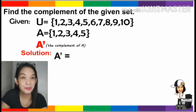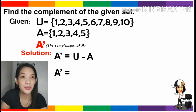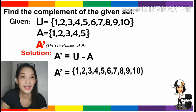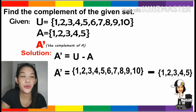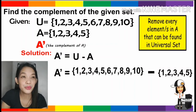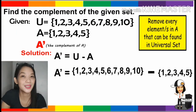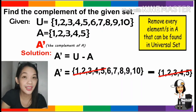To get the complement of A, we compute the universal set minus set A. So we must list the elements of the universal set, which are 1 to 10, then subtract the elements of set A, which are 1, 2, 3, 4, and 5. We must remove every element in A that can be found in the universal set. We must remove 1, 2, 3, 4, and 5, because those are also present in the universal set.